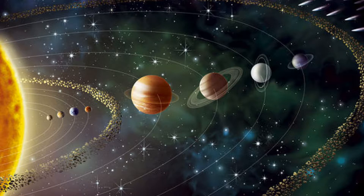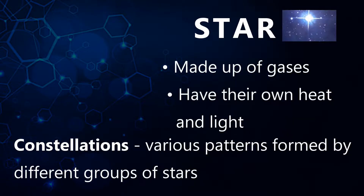Let's have a look at each of them. A star is a celestial body — they are big and hot and have their own heat and light. We know the Sun is a star. Stars are made of gases. Patterns formed by different groups of stars are known as constellations.